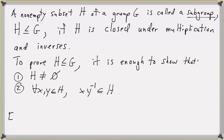Some quick examples of subgroups: given a group G with identity element E, the set containing only the identity element and the set G itself are subgroups of G. These are called the trivial subgroups.